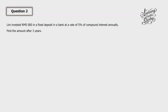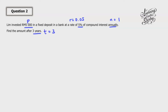For question two: Lim invested 5000 ringgit in a fixed deposit at the rate of 5% compound interest annually. Find the amount after 3 years. So the principal is 5000, the rate R is 0.05, annually means N equals 1, and after 3 years means T equals 3.